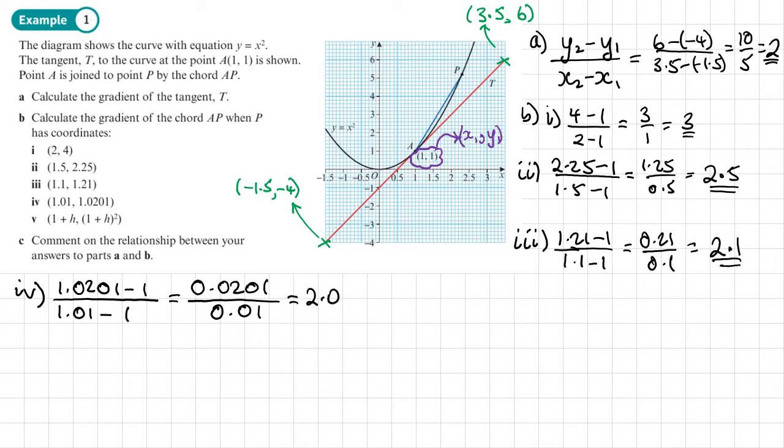And that gives 2.01 for the gradient. Then for the last point, it's different - it's saying 1 plus something, 1 plus something all squared. Let's think about this: if this is the x coordinate, how do we find the y coordinate? Well, we take the x coordinate and we square it.